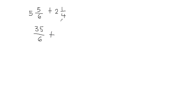Then we're going to put the plus sign in between and convert this mixed fraction into an improper fraction. So we're going to multiply 2 and 4. 2 times 4 gives 8, and then 8 plus 1 gives me 9. So my numerator is going to be 9 and my denominator will not change — so my denominator is going to be 4. That gives us 9 fourths.